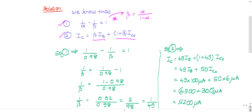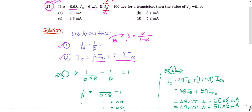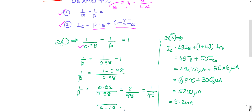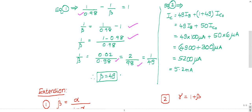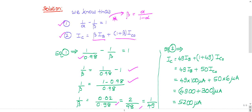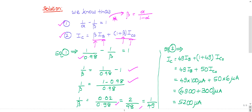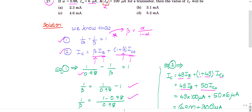From the first formula, I substituted alpha = 0.98 and solved for beta. After simplification — you can check the steps — you get beta = 49. After getting beta, substitute into the IC expression: IC = beta·IB + (1 + beta)·IC naught. Beta is 49, so it becomes 49·IB + (1 + 49)·IC naught, which is 49·IB + 50·IC naught.